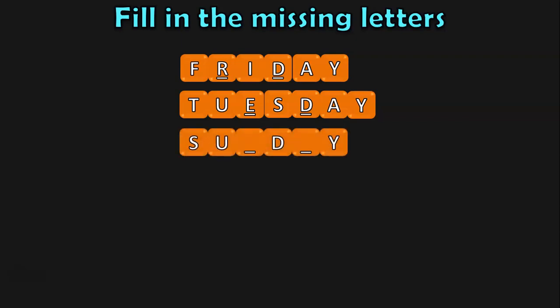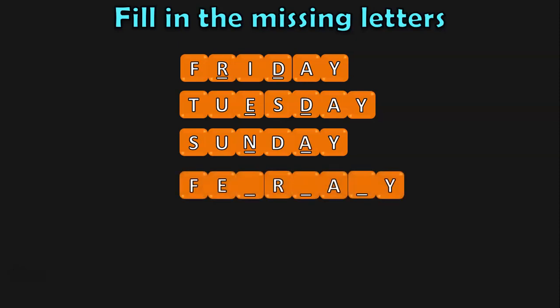Next, we have S, U, blank, D, blank, Y — the answer is S, U, N, D, A, Y — Sunday. Then we have F, E, blank, R, blank, A, blank, Y — this is surely not a name of a day, so it is a name of a month. We have February beginning with F, so write the missing letters: F, E, B, R, U, A, R, Y — February.